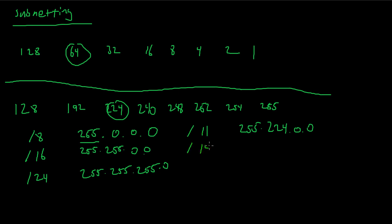Let's do a slash 14. Slash 14 is between 8 and 16, so this first part is going to be the same—255 is going to be there. And 14 minus 8, what is that? That's 6: 1, 2, 3, 4, 5, 6. Boom! 255.252.0.0. That's a slash 14. It's that easy.